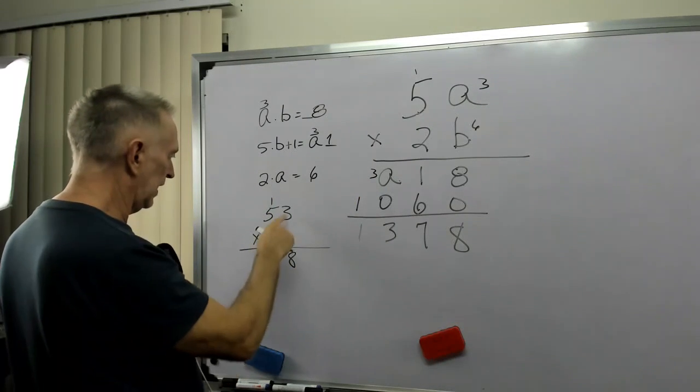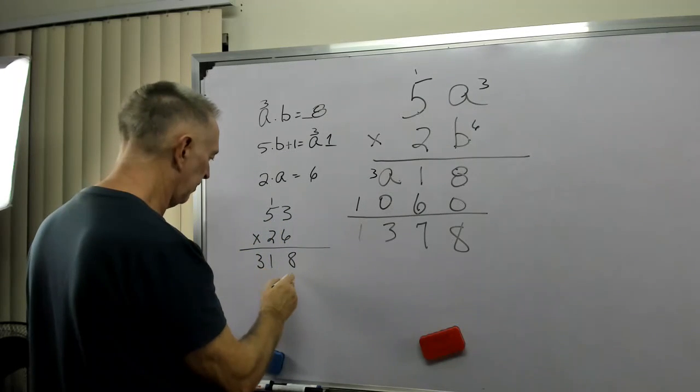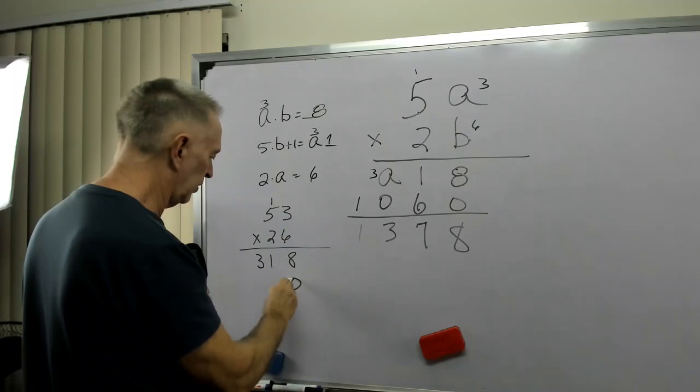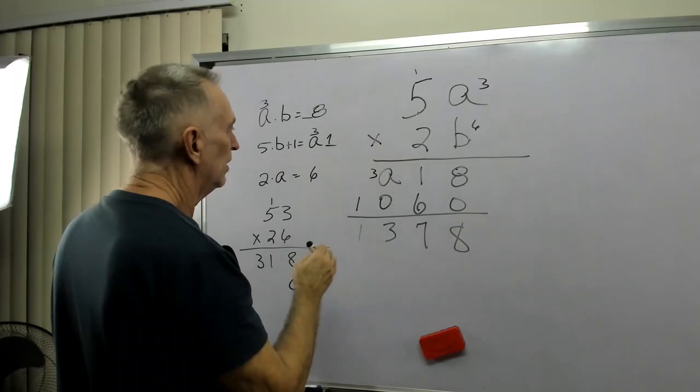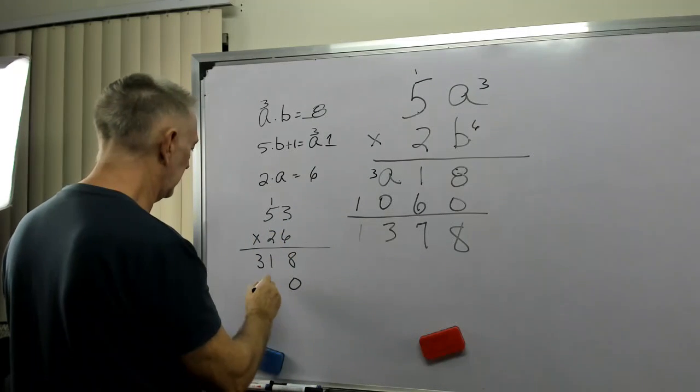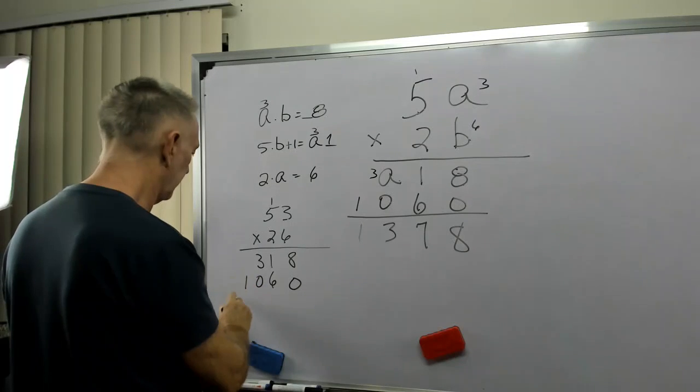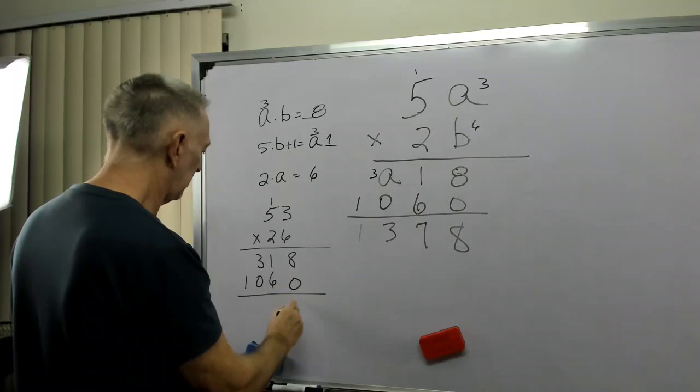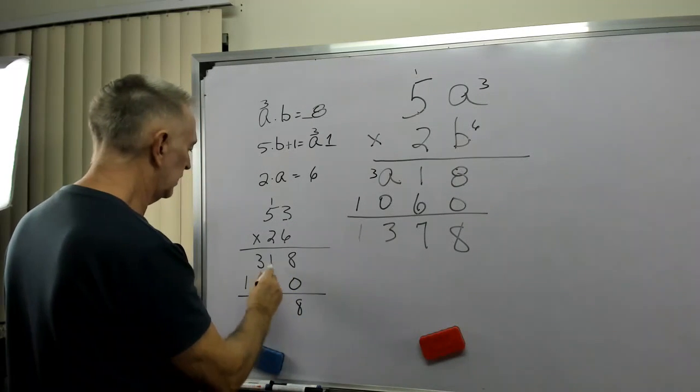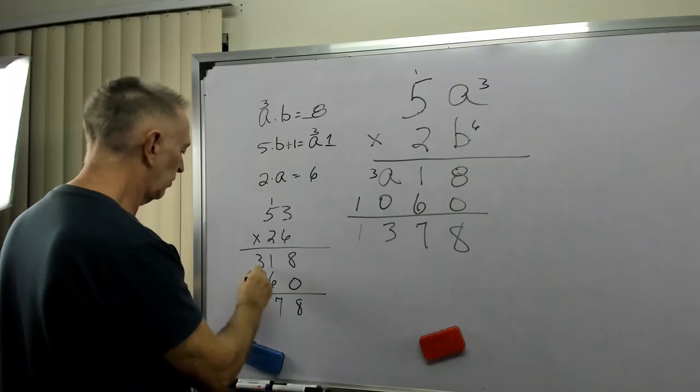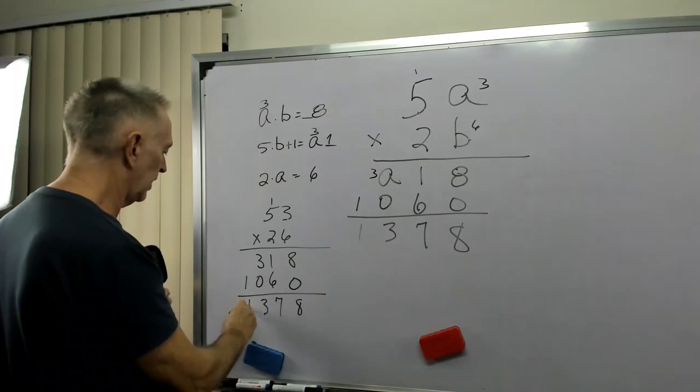Because this was A, that's A, and those two numbers are the same. All right, Christine, what do you do? Bring a 0 down. All right, now, 2 times 3 is 6. 2 times 5 is 10. 8 plus 0 is 8. 6 plus 1 is 7. 3 plus 0 is 3. Bring the 1 down.